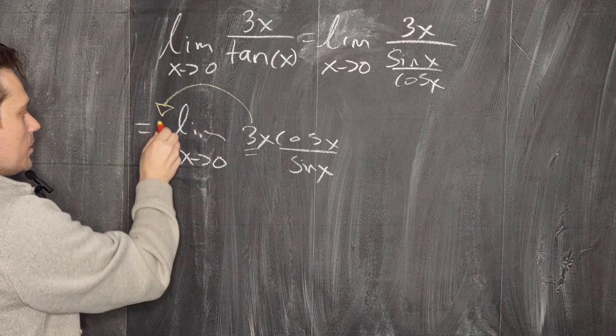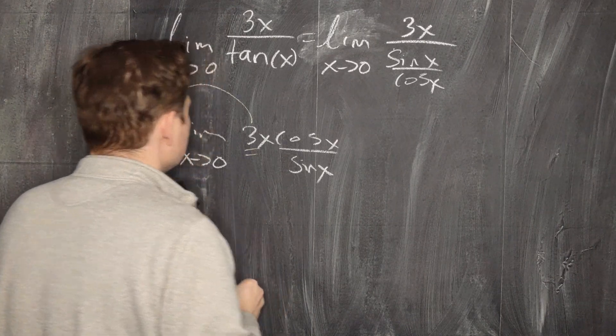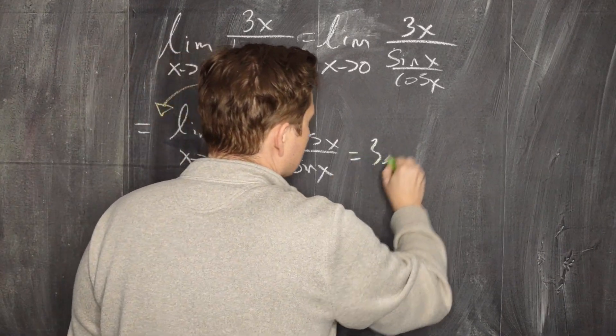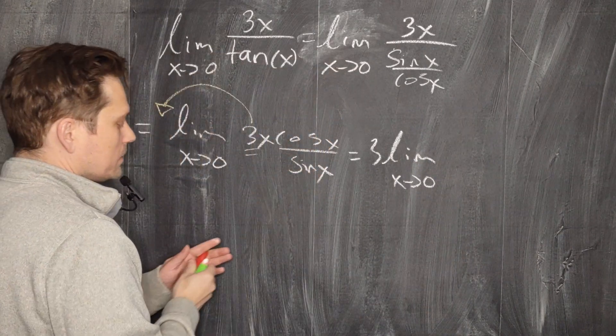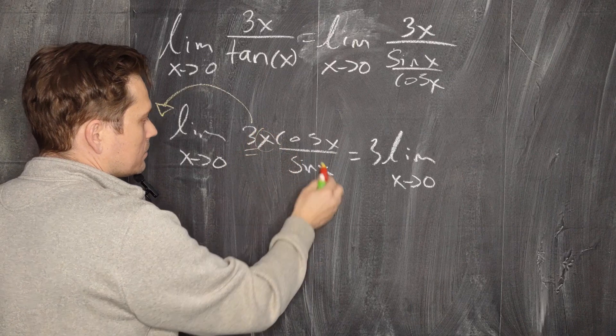Now take a look, there's a 3 here that we can be factored outside and put out there. So the next stage we're going to have 3 times the limit as x approaches 0. Now we have to regroup this in a very useful way.